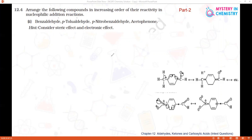This is the second part of the same question 12.4: arrange the following compounds in increasing order of their reactivity in nucleophilic addition reactions. The second set includes benzaldehyde, paratolualdehyde, paranitrobenzaldehyde, and acetophenone. Here also the same hint is given: steric effect and electronic effect we have to consider to arrange the order.